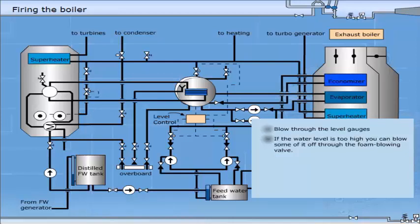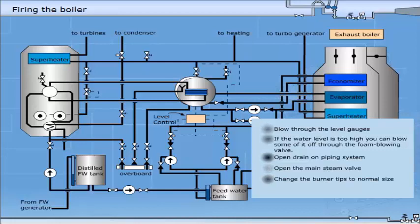When you have reached the operational pressure, you should start to heat the piping system by opening the drain valves. Check that the water level is not too high before you open the main steam valve. This is because the lower pressure on the steam line may cause water to enter the superheater. Change the burner tips to normal size. Check again oil-air ratio before you switch to automatic control.